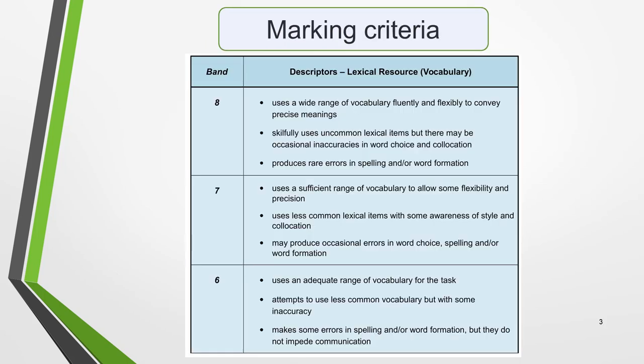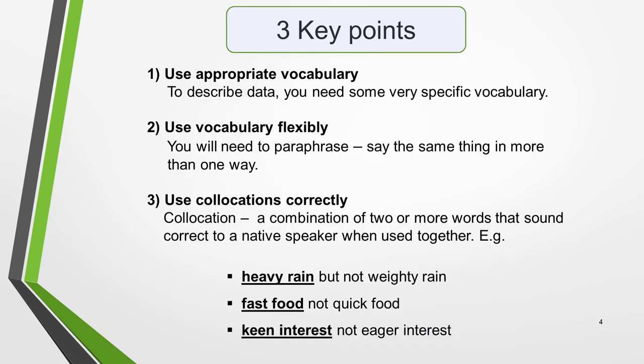Before we start looking at the specific vocabulary you'll need for your task 1 academic essay, it's essential that you understand how vocabulary — also called lexical resource — is assessed, so that you know what the examiner is looking for. We're going to focus on band six to eight, as these are the levels most students are aiming for. Here are the official marking criteria. The marking criteria can be summed up in a single sentence: it's the ability to use a range of appropriate vocabulary and to use it correctly.